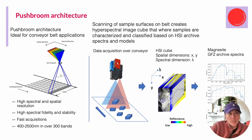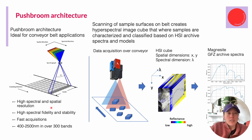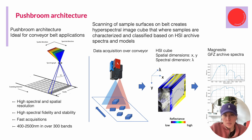Most hyperspectral instruments, especially in the shortwave infrared, collect data in push broom architecture. That comes from satellite imagery as well. Either the camera moves over an image to collect line by line, or the sample or material is moving under the camera — as in the case of conveyor belts. That's how the whole image is built up line by line, and we get the spectral information within each wavelength being recorded.